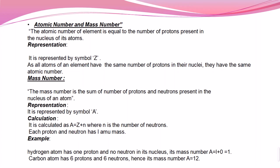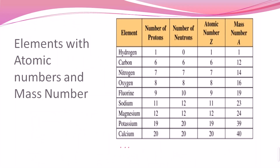For example, hydrogen has one proton and no neutrons, so its atomic number is one and its mass number is also one. Carbon has six protons and six neutrons. So the atomic number of carbon is six, and its mass number is twelve — because six plus six equals twelve.